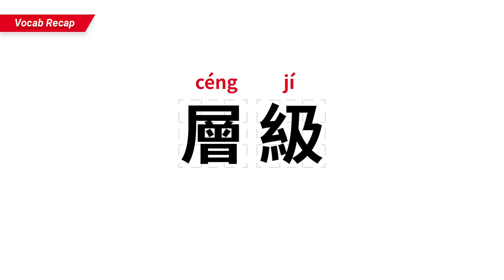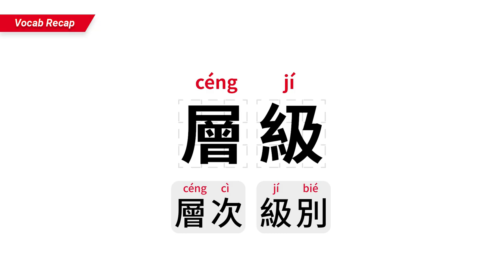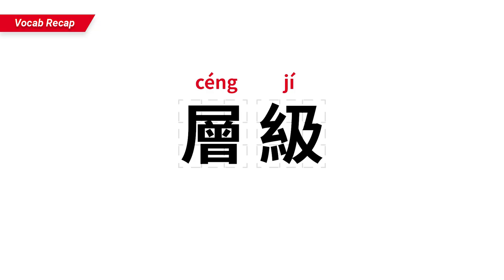词汇复习：层级。层就是层次，我们可以想象一层一层的楼房高低不同。级是指级别，比如一级一级的台阶也是高低不同。层级也就是层次等级。在新闻中，商务舱、经济舱就属于不同的层级，商务舱的层级比较高。